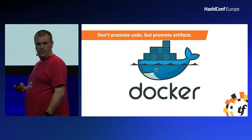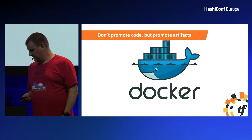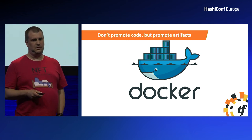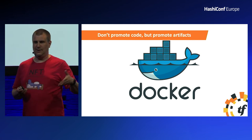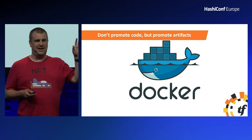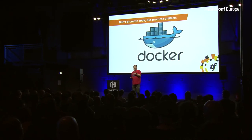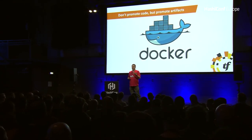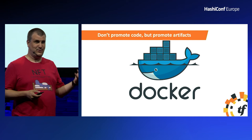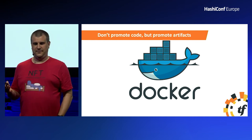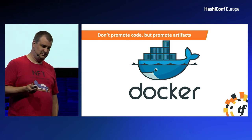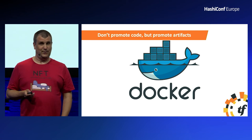That brings me to the next thing: promote artifacts, don't promote code. Build native OS packages, or if you're going to the cloud, build Docker images — and promote those. Don't merge a branch called acceptance into production and then do an NPM install on prod, because your continuity problem might become actual downtime and money-costing downtime. Because if an angry developer pulls a package because he's angry at NPM, you're basically screwed — you cannot deploy any further.